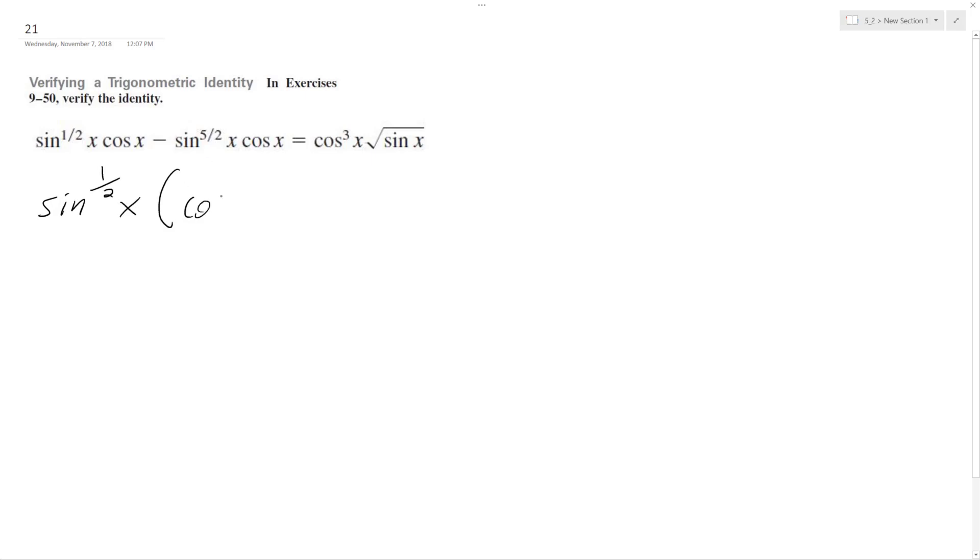So I'm left with cosine x minus sine squared x, because that's the same thing as 4 over 2, which is squared, and then times cosine x.